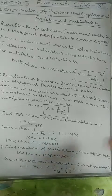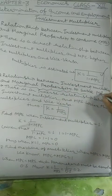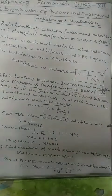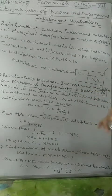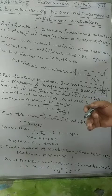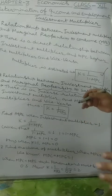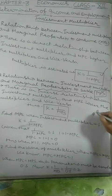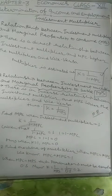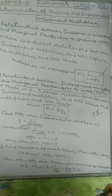MPC (marginal propensity to consume) is called the multiplier's friend (multiplier का दोस्त). On the other hand, MPS (marginal propensity to save) is called the multiplier's enemy (multiplier का दुश्मन), because whenever there is expenditure — and investment is a form of expenditure — there must be an increase in the income of the other person. But if that other person's marginal propensity to save is high, he spends only a little on consumption. For example, if MPS is 0.8 and we invest ₹10, the second person's income rises by ₹10, but he will save ₹8 and spend only ₹2.